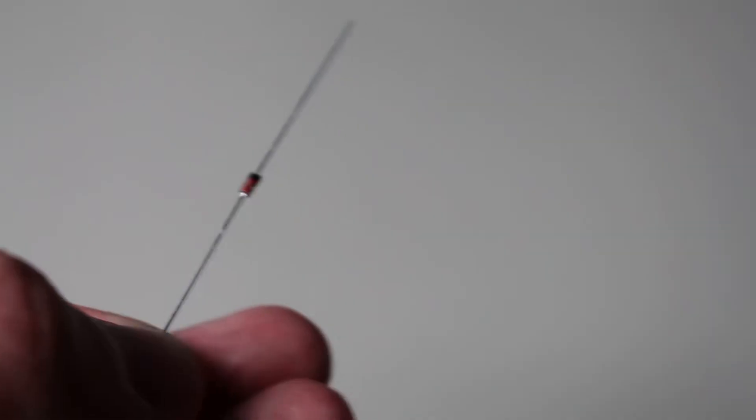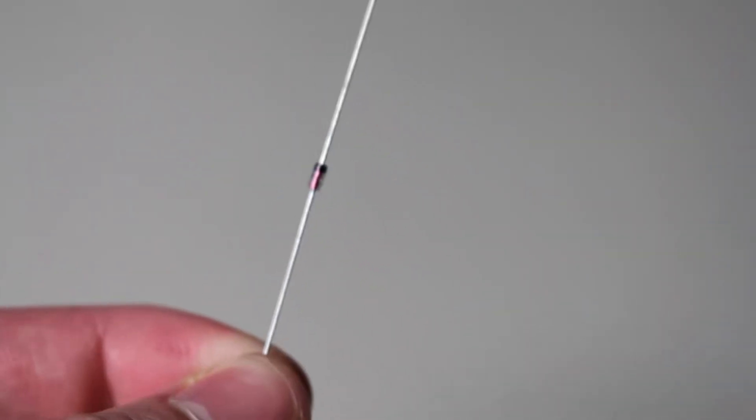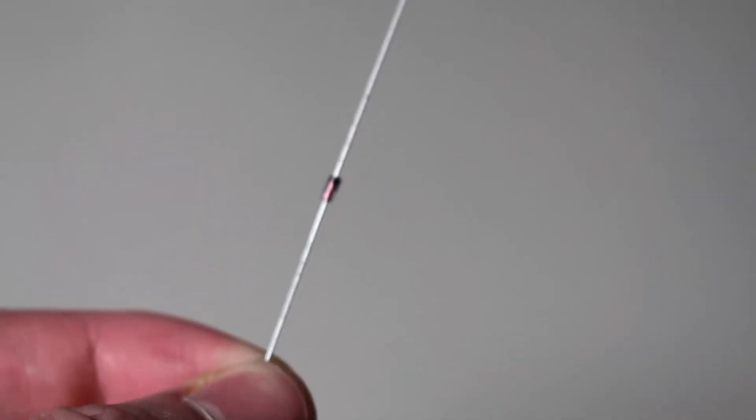You may be familiar with the zener breakdown from the zener diodes. An avalanche breakdown has similar properties, but is a bit different. Either way, it will allow us to use our transistor as a negister. And there are only certain periods in which the negister actually gives us negative resistance.